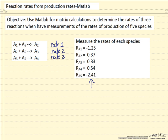So we have more measurements than unknowns, and so we have to do a least squares fit to do this, and that will give us the best fit to the data for these three reactions.